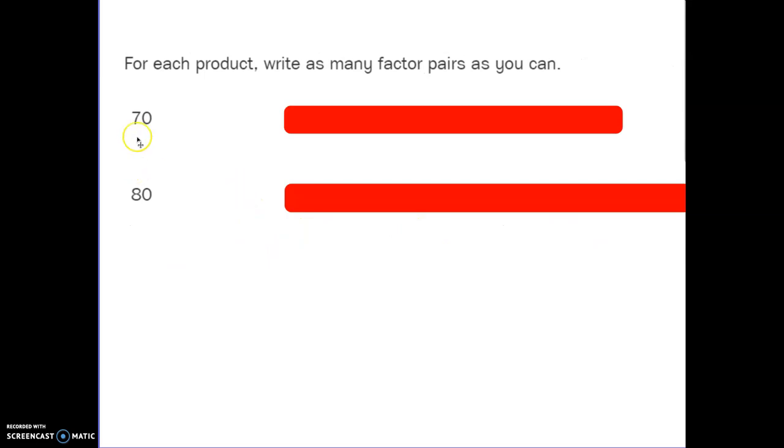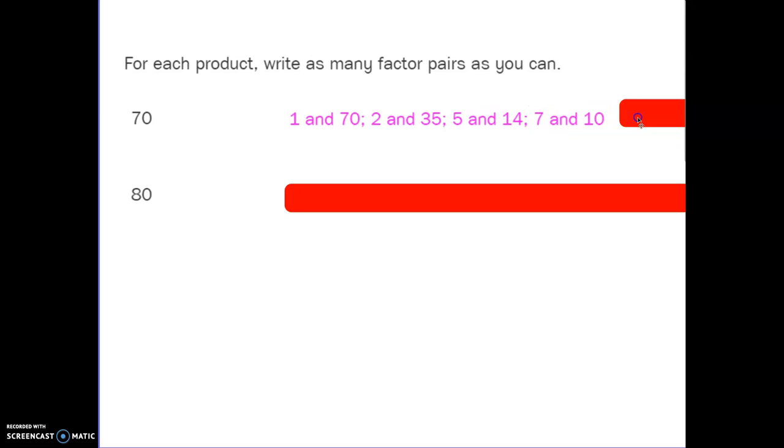Last two products: 70 and 80. Pause the video while you write down as many factor pairs as you can think of for 70 and 80. Remember, it's always going to be 1 and the number, so 1 and 70, 2 and 35, 5 and 14, 7 and 10.